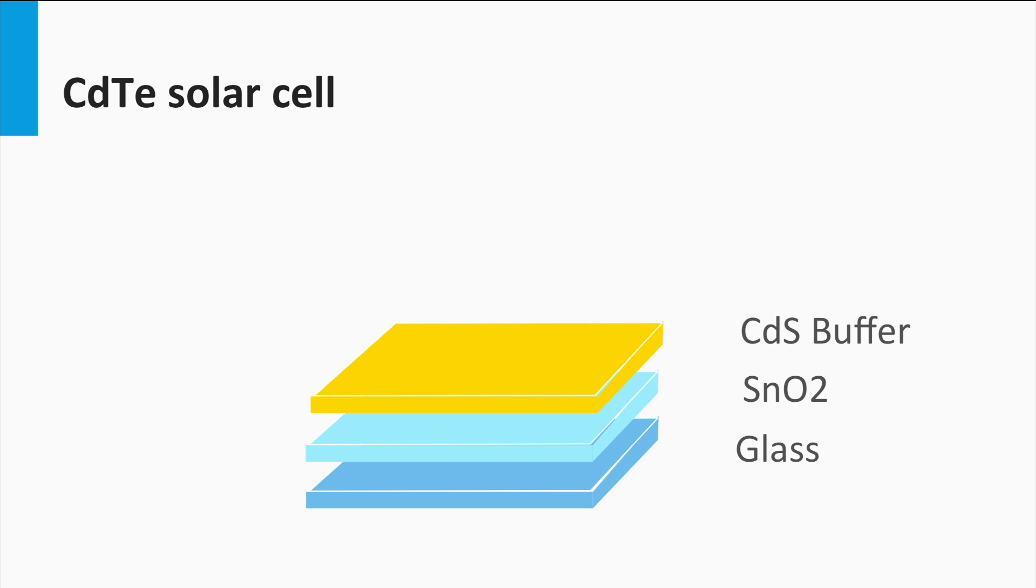On top of that the N-layer is deposited, which is a cadmium sulfide layer, similar to the N-buffer layer in CIGS solar cells.